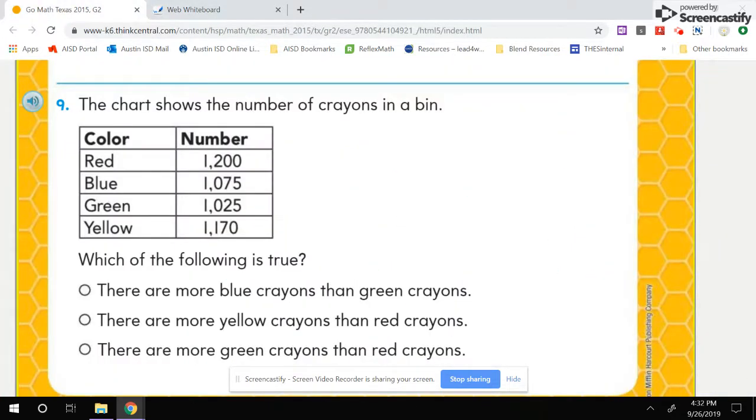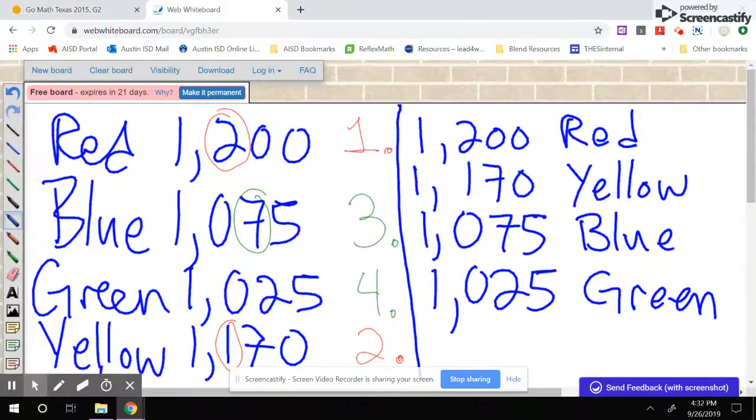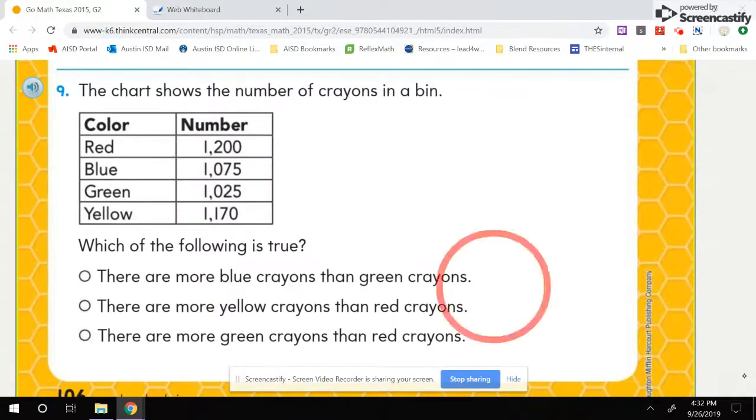When I read the answer choices, which of the following is true? There are more blue crayons than green crayons. When I check my work, I can see if that's true. Blue is greater than green, so that's a possible answer choice. This could be right.